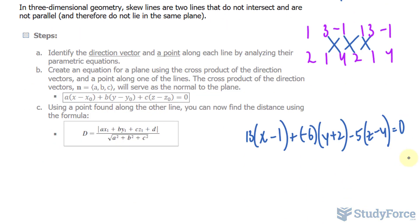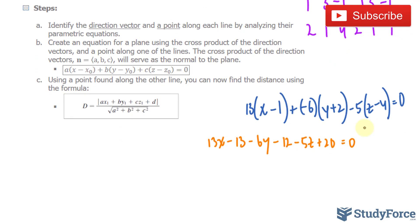Let's expand this and get a constant out of it. So we have 13x minus 13 minus 6y minus 12 minus 5z plus 20 is equal to 0. Collecting like terms, minus 13 minus 12, that's minus 25. Plus 20 is minus 5. So 13x minus 6y minus 5z minus 5 is equal to 0.